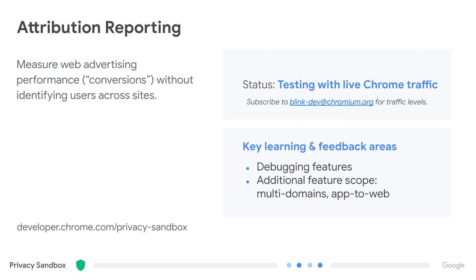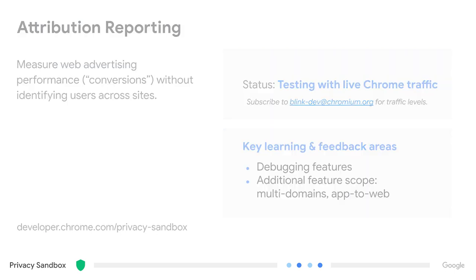As we move to the integrated utility testing phase later this year, we also have plans to support attribution across web and app contexts as part of integrating the Chrome and Android sides of the Privacy Sandbox. And while we have the first stage of integration that allows the use of attribution reporting from within Fledge, I'm sure it will get refined as people begin testing the APIs together.